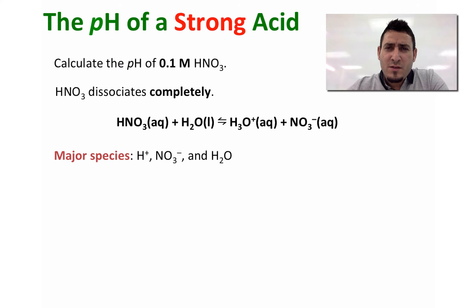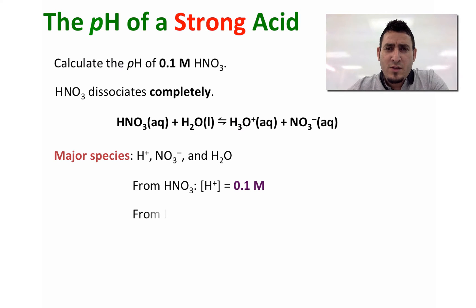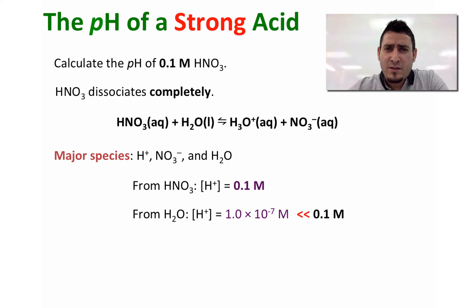The major species in this solution are H⁺, NO3⁻, and water. The concentration of H⁺ coming from the nitric acid is equal to the initial concentration of nitric acid, which is 0.1 molar. However, we have another source of H⁺ from water, but its concentration is 1.0×10⁻⁷ molar — way smaller than the 0.1 molar from HNO3. So we will neglect the H⁺ contribution from water.